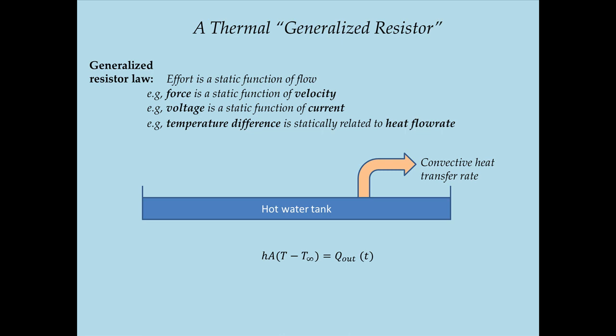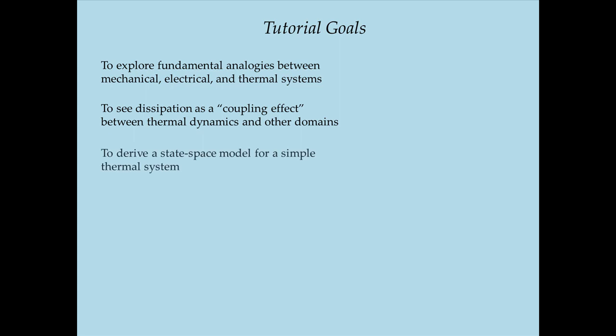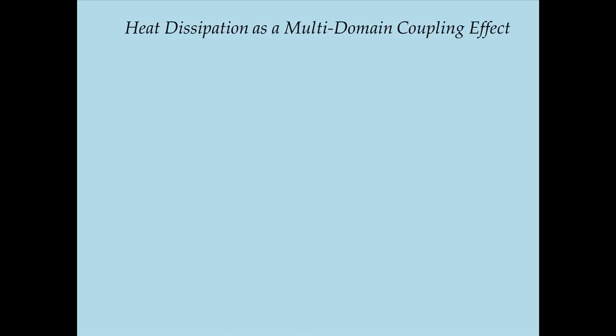We've covered the first tutorial goal and explored fundamental analogies between mechanical, electrical, and thermal systems. The next thing I want to do is to look at heat dissipation from the mechanical and electrical worlds and explore the idea that this heat dissipation serves as a coupling effect between the thermal domain and other domains. This is a very simple yet incredibly important idea because it will help us establish multi-domain models of dynamic systems.